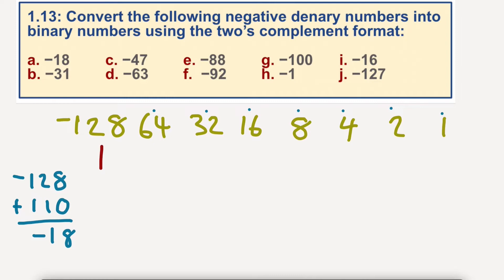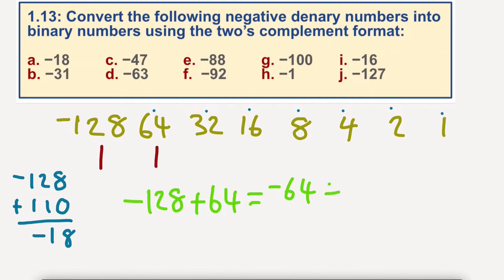So let's have a little look at this. If I start with minus 128, and I add 64 to it, I'm going to get minus 64. So I'm going to add that to it. If I then add plus 32 to this, I'm going to end up with minus 32. And if I add 16 to this, I would end up with minus 16. I'm trying to get to minus 18, so I'm going to stick a 0 in there.